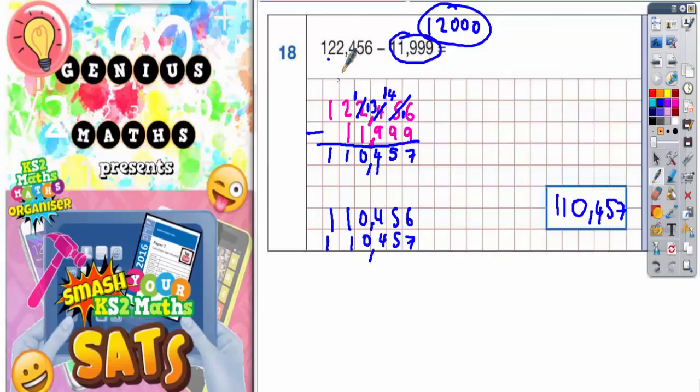So it is possible to do that one mentally simply because this is almost 12,000. 122,456 take away 12,000 will be 110,456. Well you've taken off one too many. So you need to put that one back on to make 110,457.